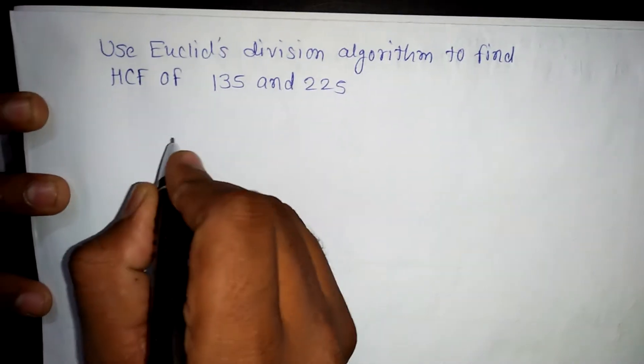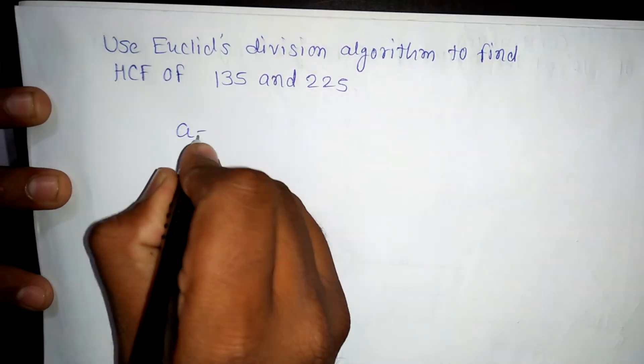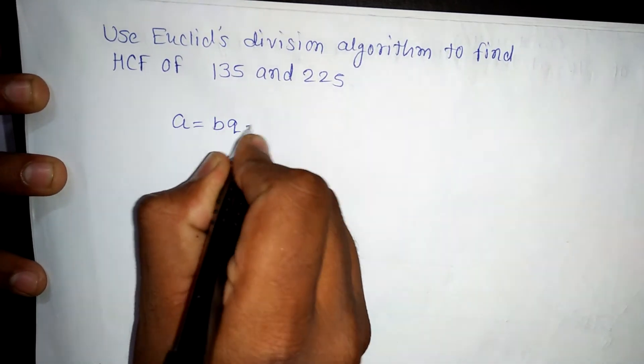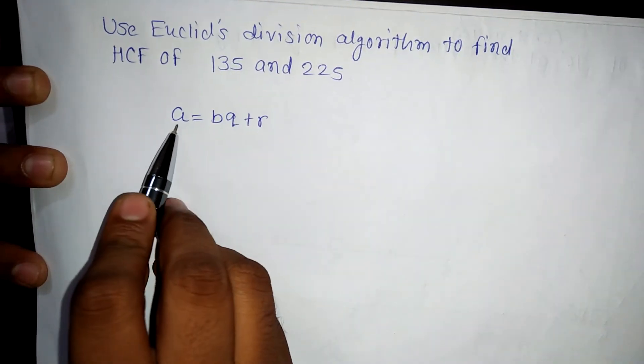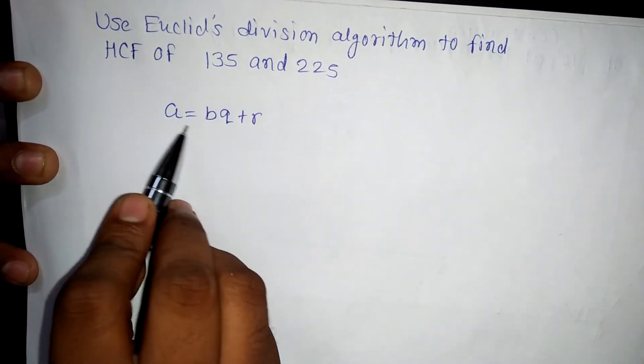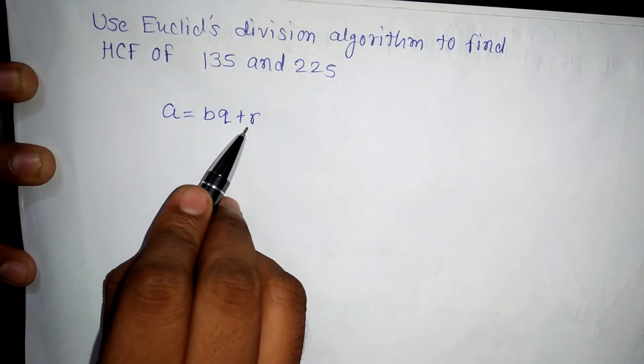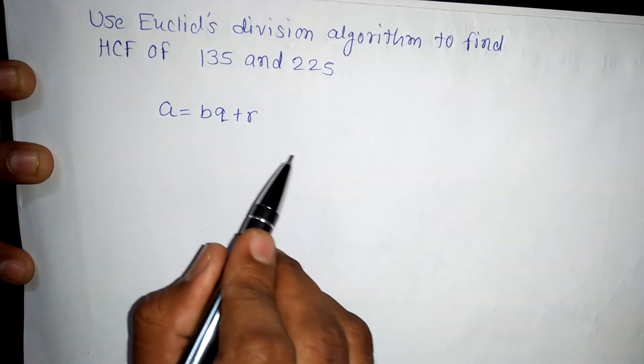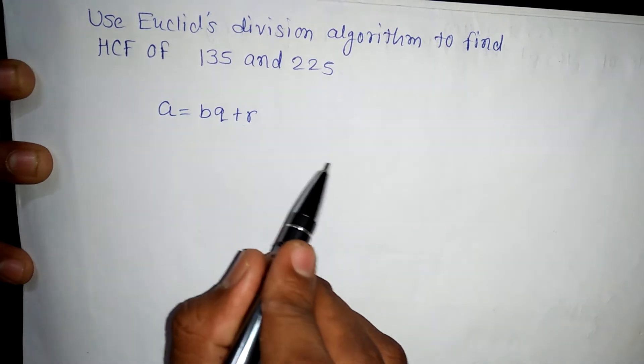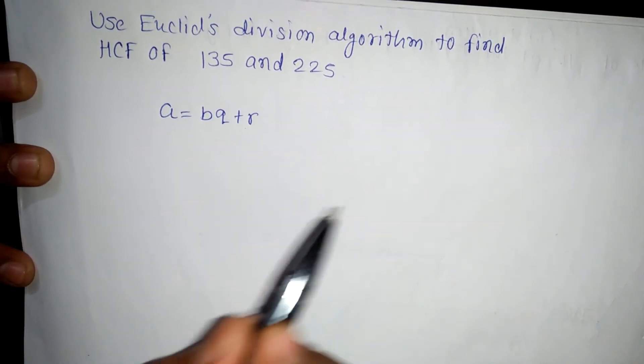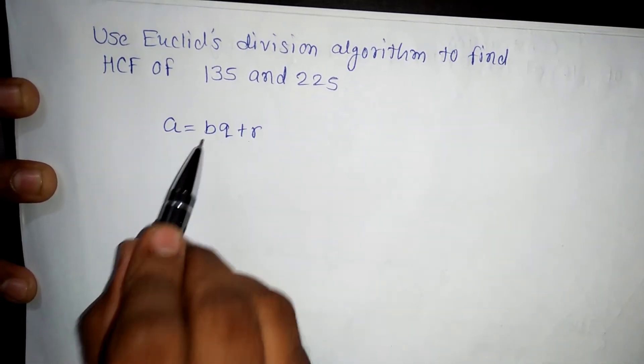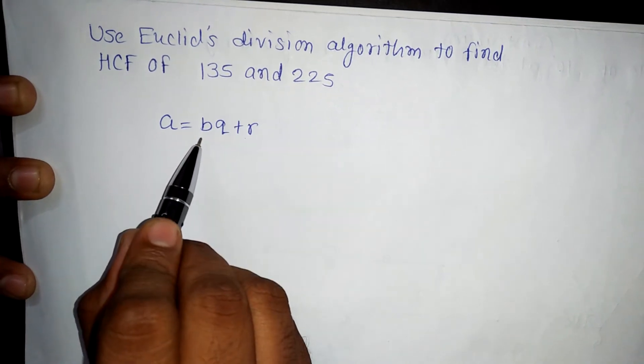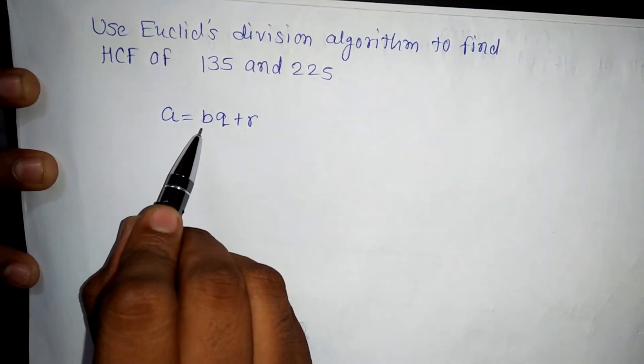We know that Euclid's division algorithm says that A is equal to BQ plus R. That is A is a dividend. Dividend is equal to divisor into quotient plus remainder, with the condition that zero is less than or equal to remainder, which will be less than B. That is less than divisor.